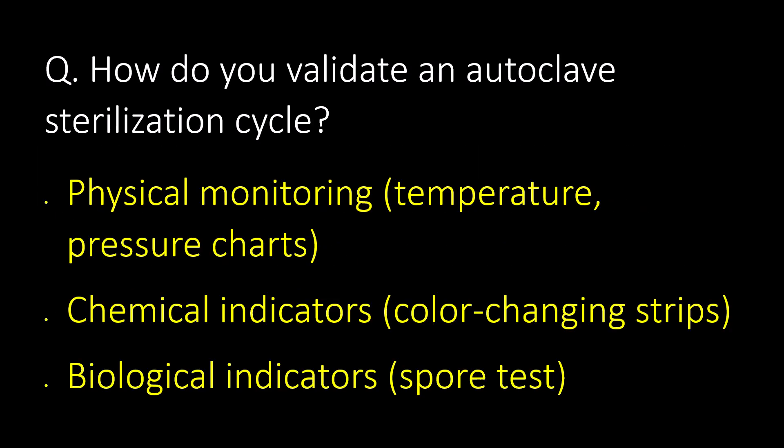How do we validate an autoclave sterilization cycle? First, physical monitoring — that is, temperature and pressure charts. Second, chemical indicators — the color-changing strips. And third, biological indicators, which include a spore test.